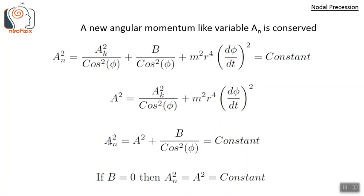So the new angular momentum-like variable A_N is related to the actual magnitude of angular momentum A as: A_N² = A² + b/cos²φ, where the summation is a constant. Note that the actual magnitude squared A² is not a constant here. However, when b = 0 we get A_N² = A² = constant. Essentially, the b term coming from the gravitational potential is providing some torque so that A² becomes a variable — that is, the angular momentum is varying. In the absence of the b term, A² remains constant.